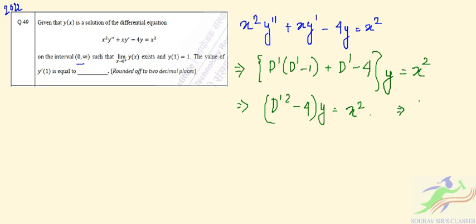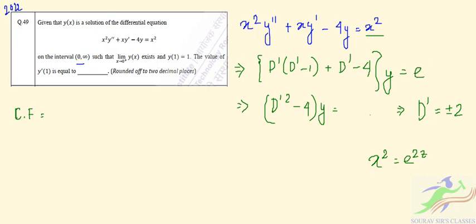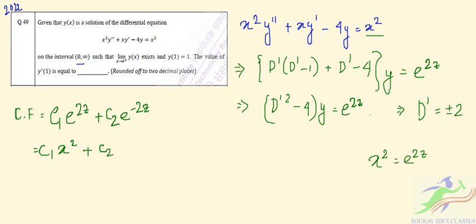From D'² minus 4 = 0, we get D' equal to plus or minus 2. So we can write the complementary function (CF) from here. If we consider x² as e^(2z), we replace x² by e^(2z). The CF will be c₁e^(2z) + c₂e^(-2z), which can also be written as c₁x² + c₂x^(-2).